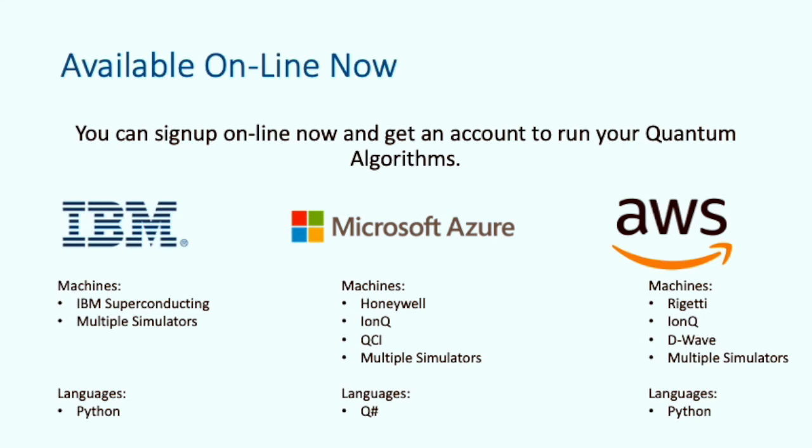IBM, Microsoft and AWS all provide easy access to quantum computing that you can use as you would any other cloud service or software as a service. Google, Rigetti and others also provide online access, but these three are probably the easiest for most people.